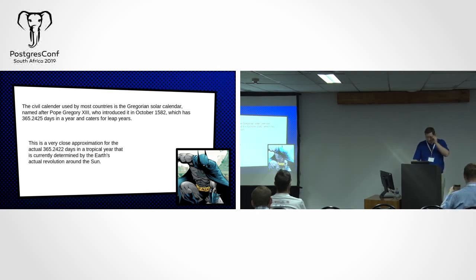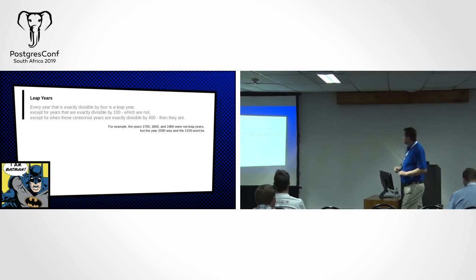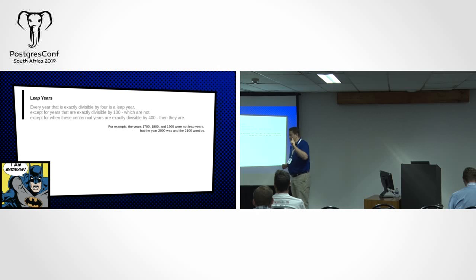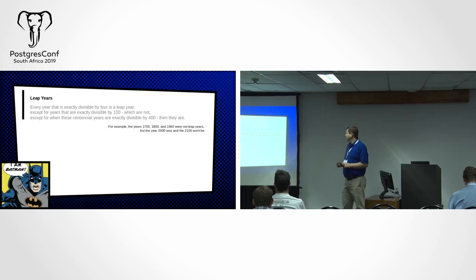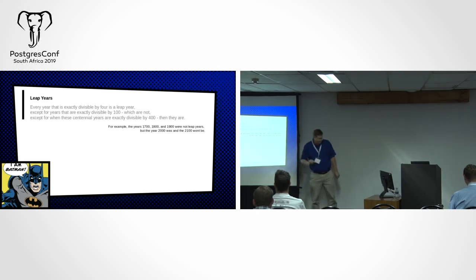Your database just does this for you automatically — it's like magic. Understanding leap years is like having a conversation with your spouse: every year exactly divisible by four is a leap year, except for years exactly divisible by 100 which are not, except when those centennial years are exactly divisible by 400, then they are. And to think that this logic was arrived at in the late 1500s — it's actually pretty awesome.